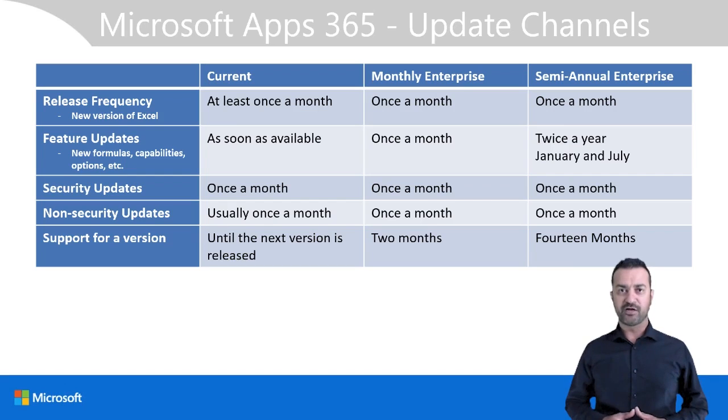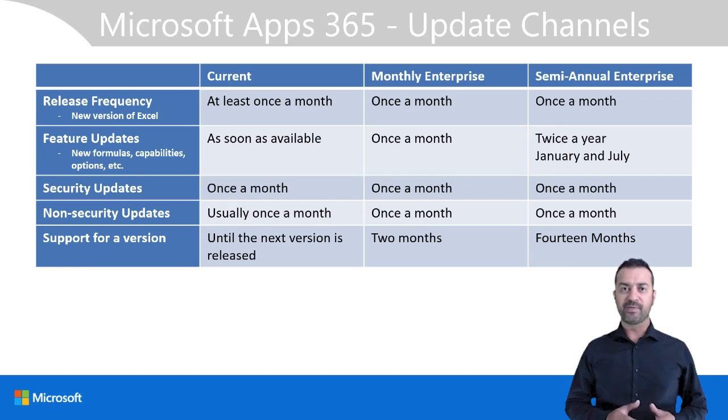Before we begin with the core materials, let's review Excel versions, especially in the context of Microsoft 365. With the advent of cloud solutions, software nowadays is deployed at a much faster pace than a few years ago, and Microsoft Excel is no exception. With Microsoft 365 apps, the solution has moved to a subscription-based model where new features, issue resolutions, and security updates are released periodically as per the policies of the selected update channel. The three primary update channels are current, monthly, and semi-annual. Your company's selected update channel will determine how often your copy of Excel is updated with the latest features and patches.